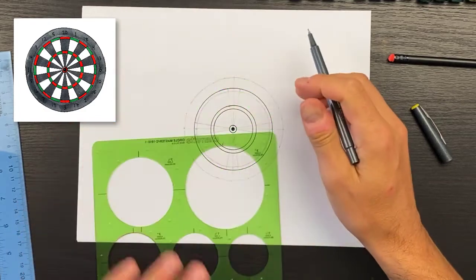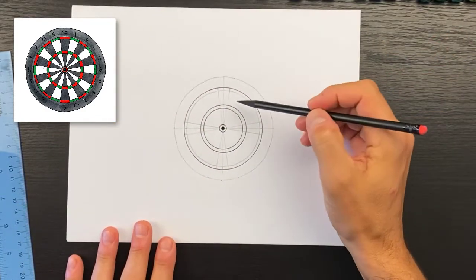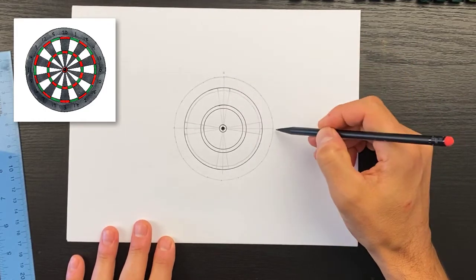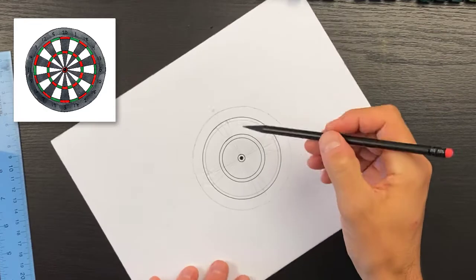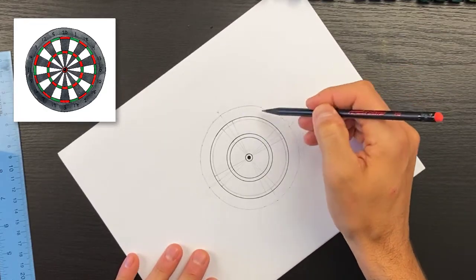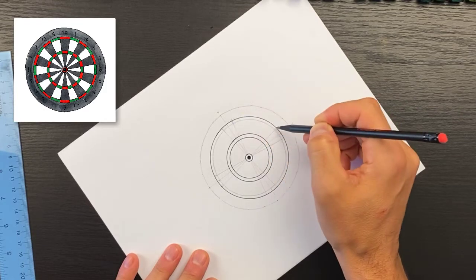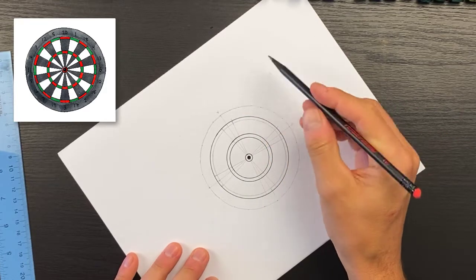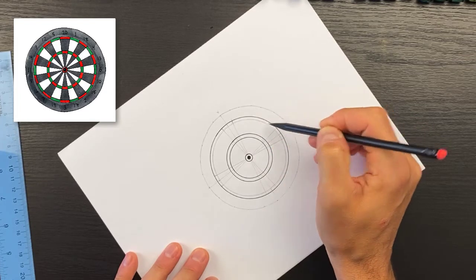The next step is we want to go from this point here and this point here and add three additional lines in here. If you go over from here to here and find the center, so in between this one and this one.